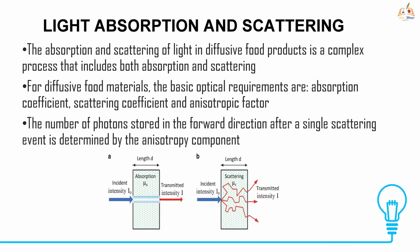Light absorption and scattering: we know that light is made up of photons. The absorption and scattering of light in diffusive food products is a complex process that includes both absorption and scattering. For diffusive food material, the basic optical requirements are absorption coefficient, scattering coefficient, and anisotropic power. Light energy is converted into other forms of energy like heat and electricity.